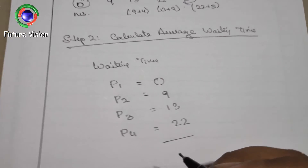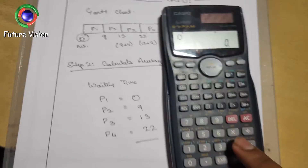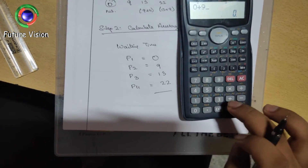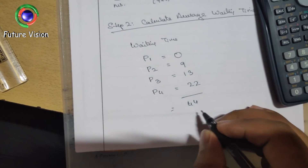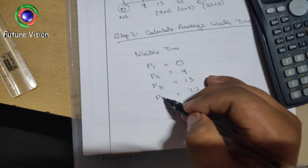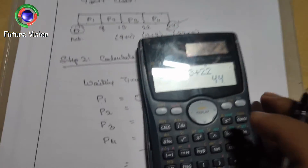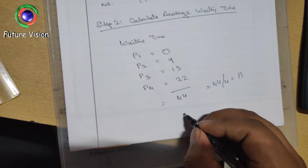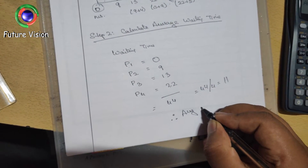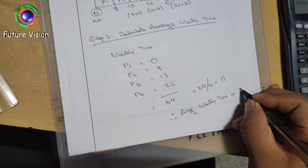So the sum of all waiting times is 0 plus 9 plus 13 plus 22, which equals 44. Dividing by the number of processes — P1, P2, P3, P4 — that is 44 divided by 4 equals 11. Therefore, the average waiting time is 11 milliseconds.